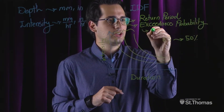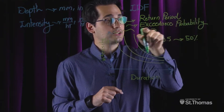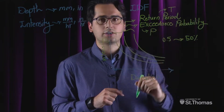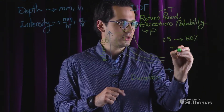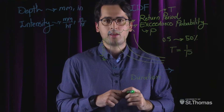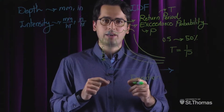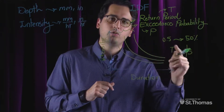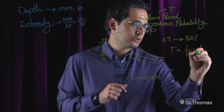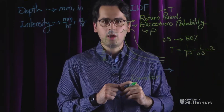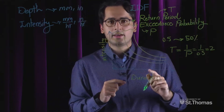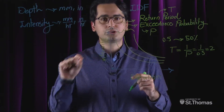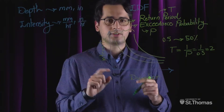If exceedance probability is expressed as capital letter P, return period can be expressed as capital letter T. T or return period is 1 over P. The annual exceedance probability of the rainfall was 0.5, therefore the return period will be 1 over 0.5, or 2 years. This tells you that in any given 2-year period, the 2-year storm or rainfall event occurs at least once.